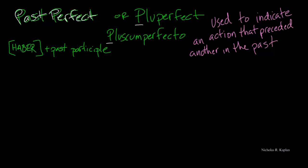Well, what do we need to know with any verb tense? It's how do we form it. So, to form the past perfect, we're going to take a form of haber, which is the auxiliary verb 'to have,' and we will put that into the imperfect tense.